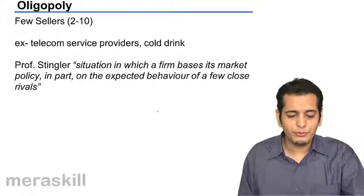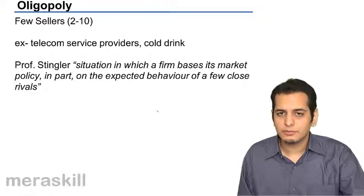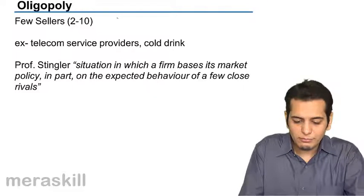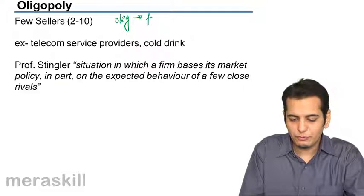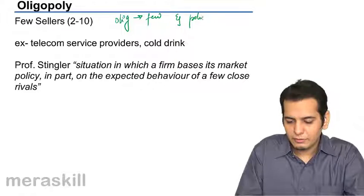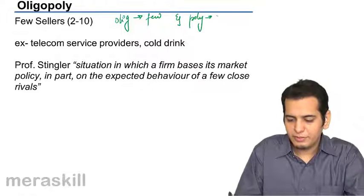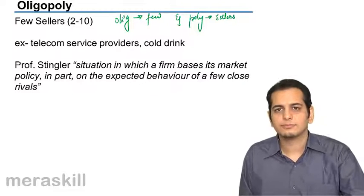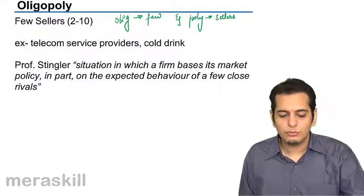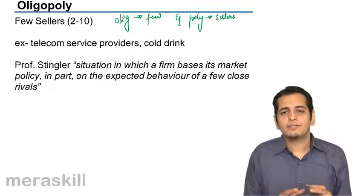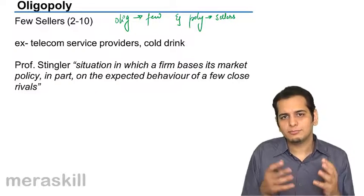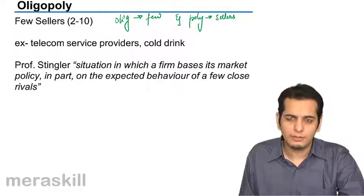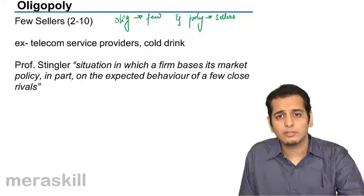Now what do you think is oligopoly? Oligopoly comes from two Greek words — 'olig' means few and 'poly' means sellers. So a market wherein there are few sellers becomes an oligopoly. It's an oligopolistic market.